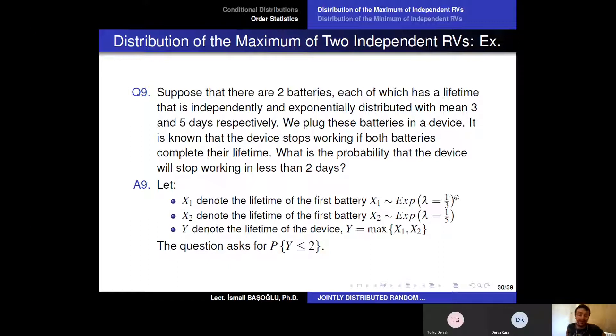Remember the rate parameter is the inverse of the average in exponential distribution. And here X2 is the lifetime of the second battery and the lifetime of the second battery is exponentially distributed with rate parameter that is equal to 1 over 5, again in daily units. And the question is asking me a probability about the lifetime of the device.